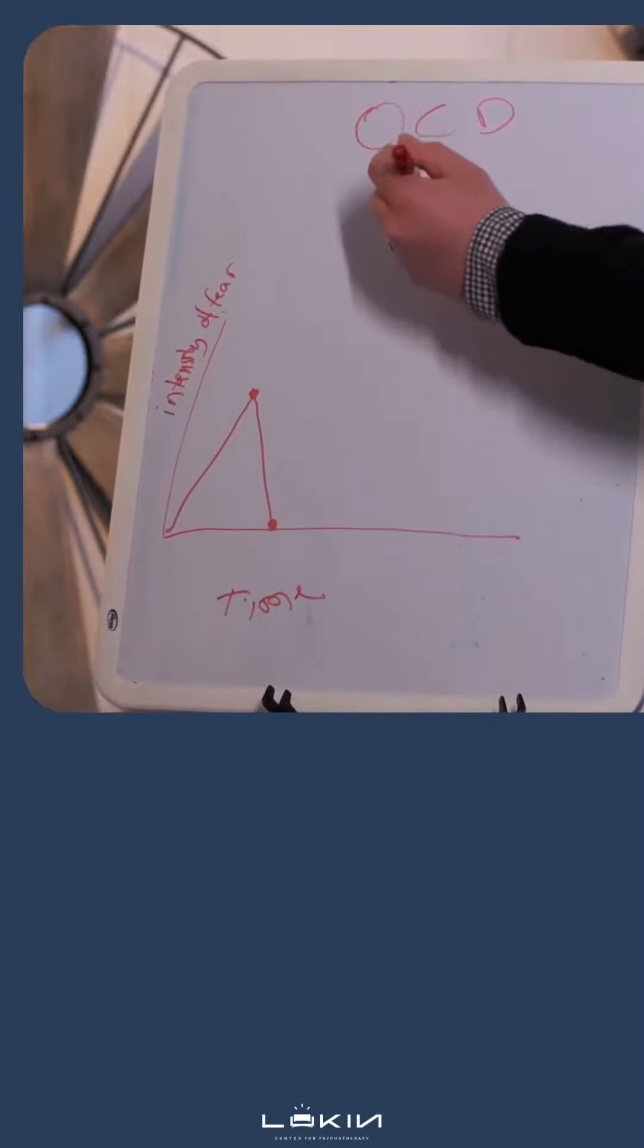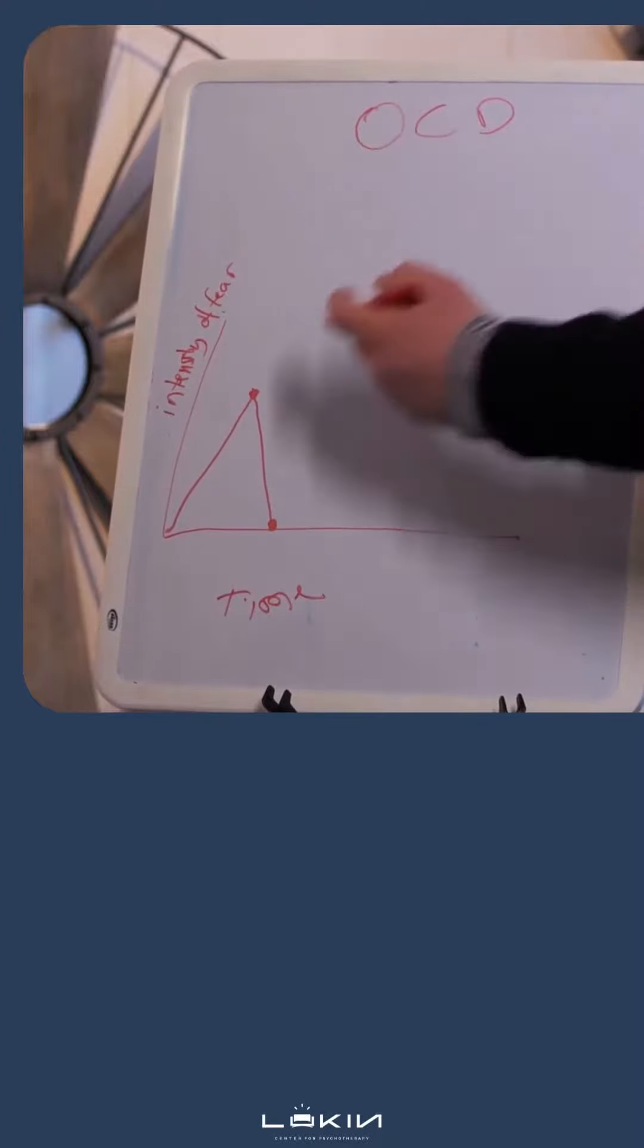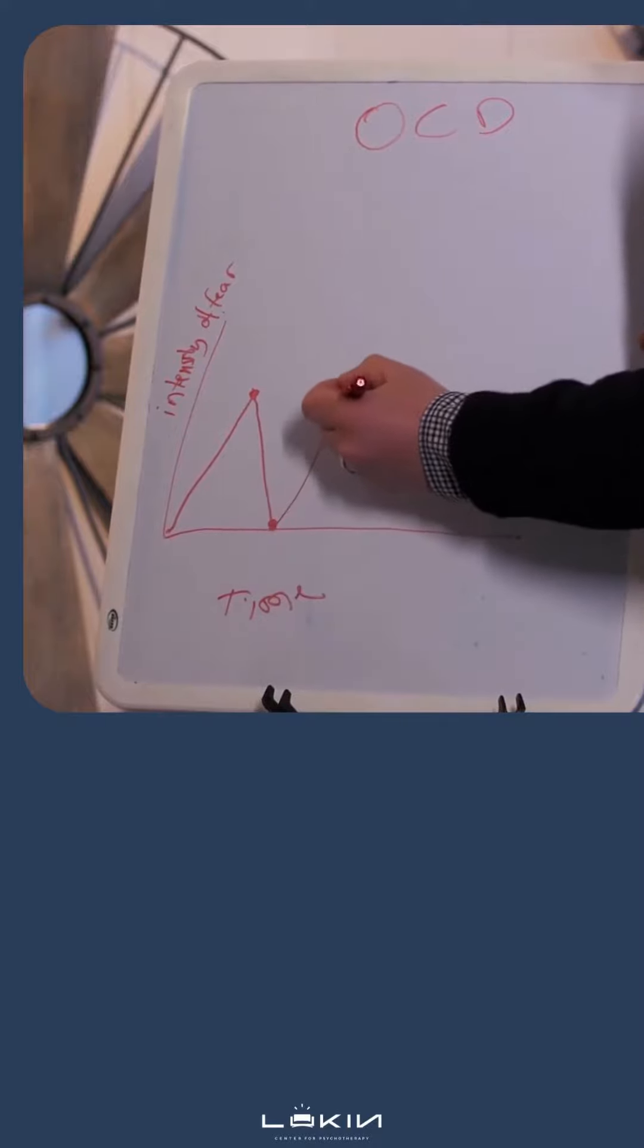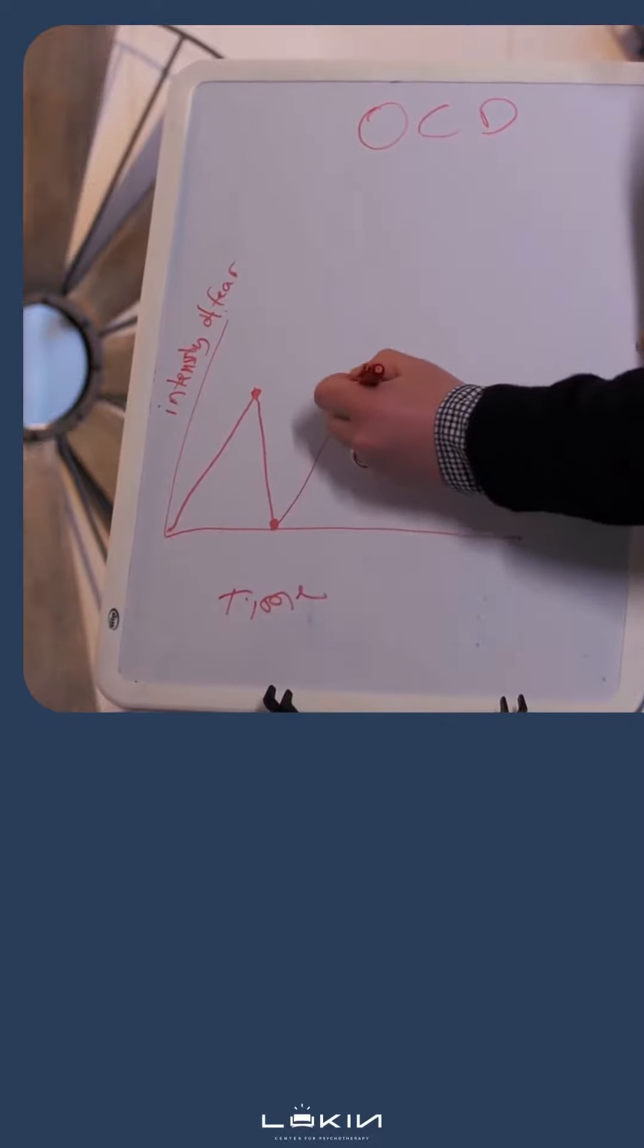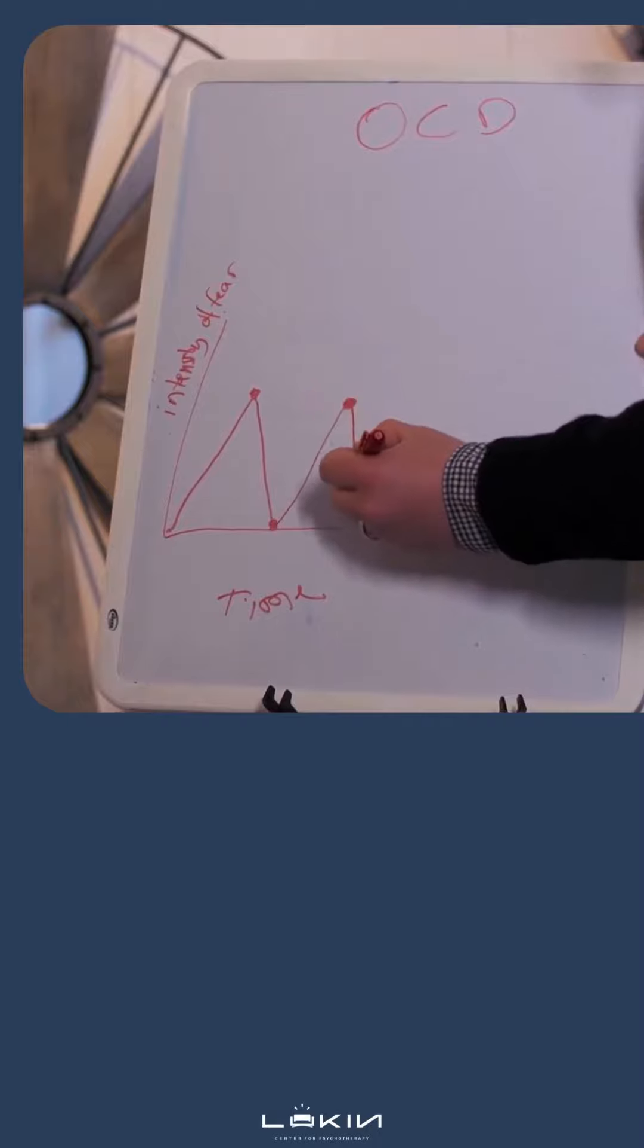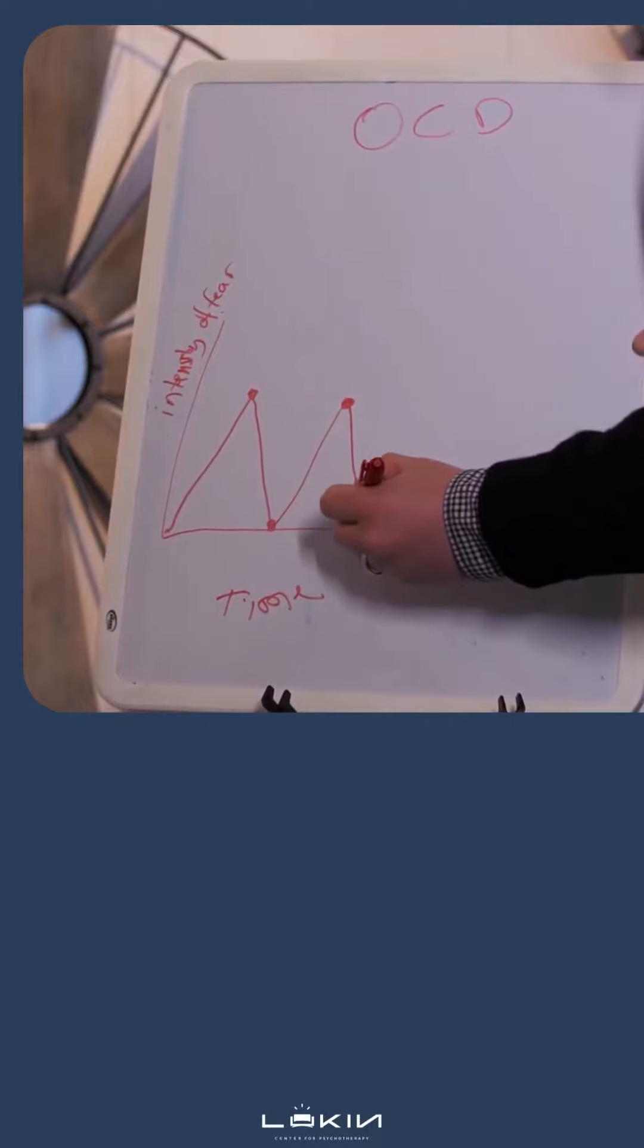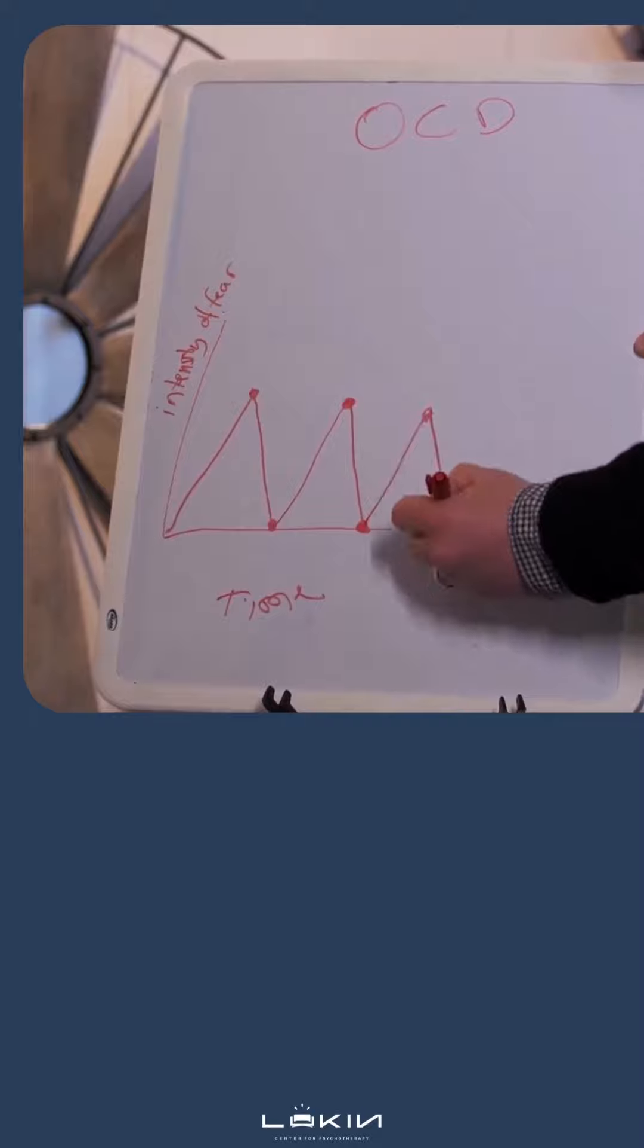Here, because of the obsessive nature of the thought, it spikes again, and again, they feel that they need to do some of the compulsions in order to reduce it, and then it goes up and it goes down.